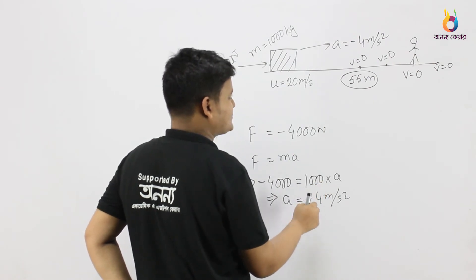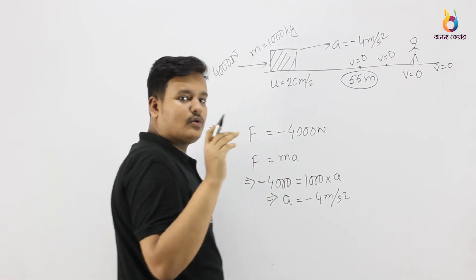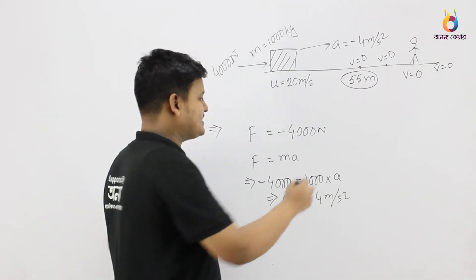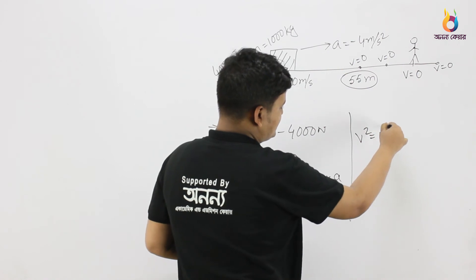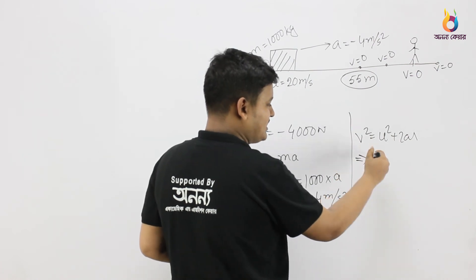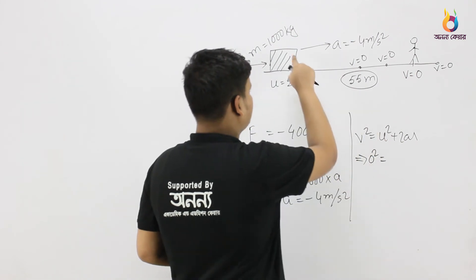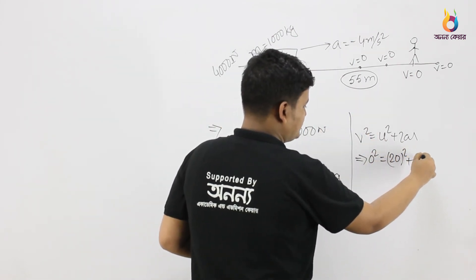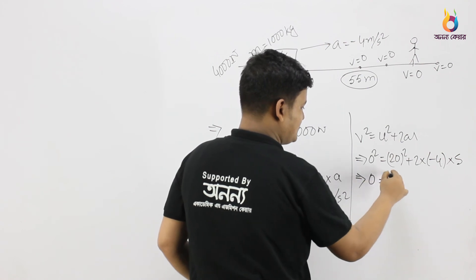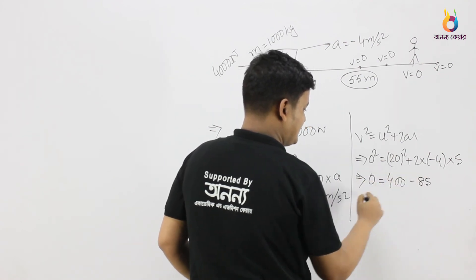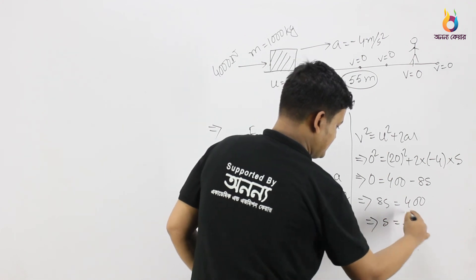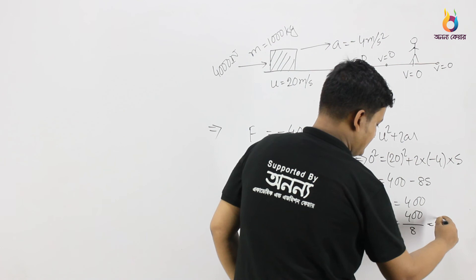The acceleration is minus 4 meters per second squared. Now using v squared is equal to u squared plus 2as. The final velocity v is zero, and u is 20 meters per second. So 0 is equal to 20 squared plus 2 into minus 4 into s. This gives 0 is equal to 400 minus 8s, so 8s equals 400, and s is equal to 400 divided by 8, which equals 50 meters.